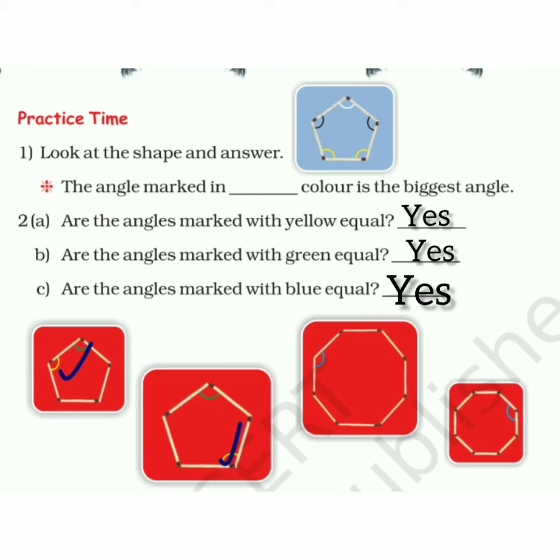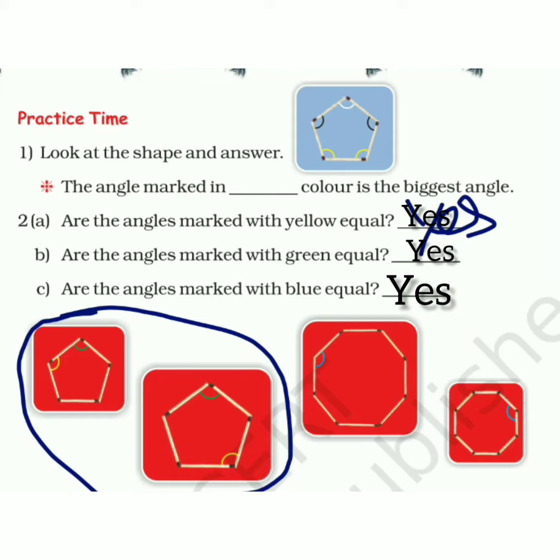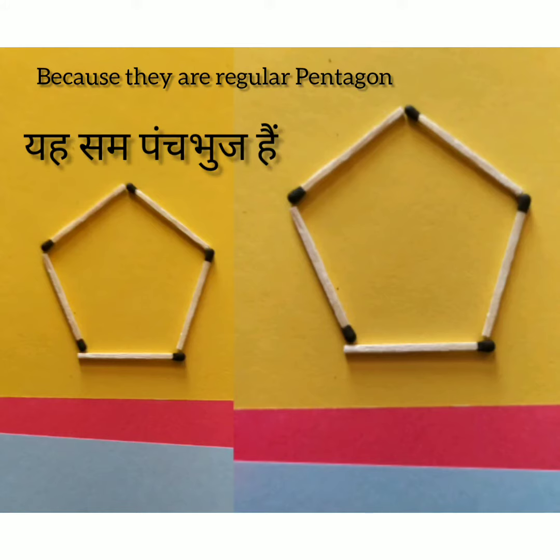Kati karana yeh kya yeh same hai—yes, because these shapes are similar shapes. Are the angles marked with green equal? Yes, this color is equal, yes.